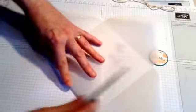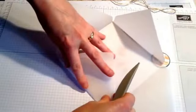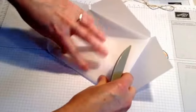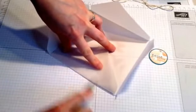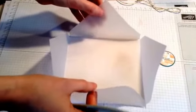I'm going to use the score tool that comes with your envelope punch board, and I'm just going to fold those flaps in and run the score tool over them. And you end up with this open envelope.